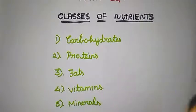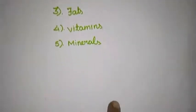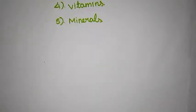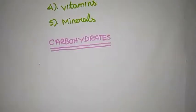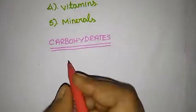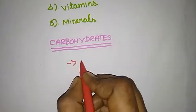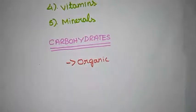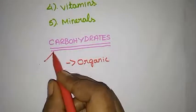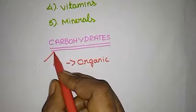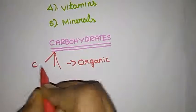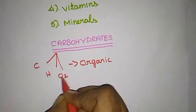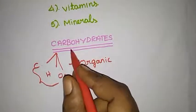First topic: carbohydrate — the first classification of nutrition. Carbohydrate is an organic component; it is not non-organic. And here, carbohydrate is formed by the fusion of three substances: first, carbon; next, hydrogen; and next, oxygen. They are fused together to form a carbohydrate.